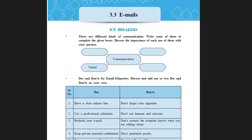On your screen, there are different kinds of communication. Write some of them to complete the given boxes and discuss the importance of each with your partner. As you can see the wave diagram on your screen, the main idea is communication. When we speak about communication, there are different kinds of communication sources: verbal communication, written communication, visual communication, and audio-visual communication. Each source has its own significance and unique way of functioning.